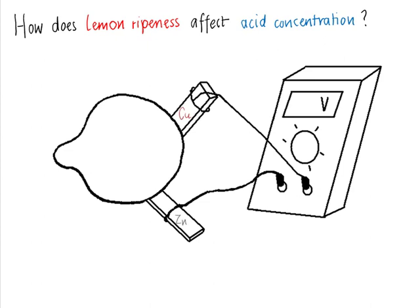When you place two different kinds of metals inside any acid — anything that's sour, like a lemon — that actually turns it into a little battery. So you can get a voltage across it, just like AAA or AA batteries that have maybe 1.5 volts. You can test how strong this battery is using a voltmeter to tell you what the voltage across those two metal pieces is.